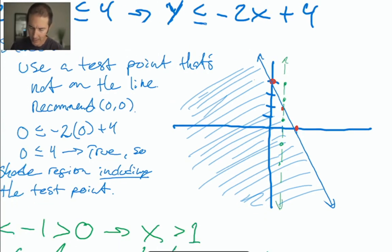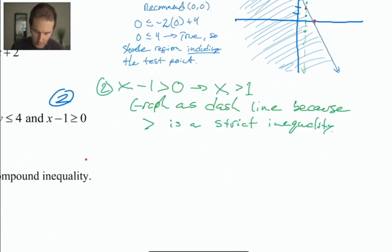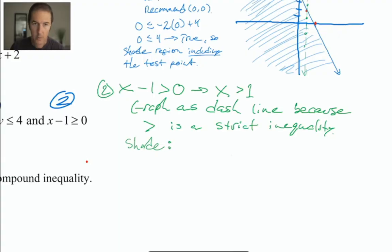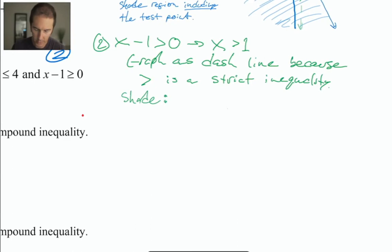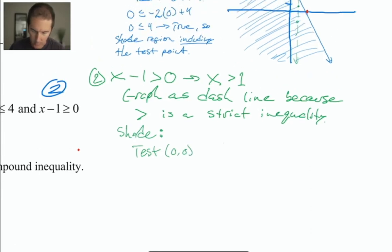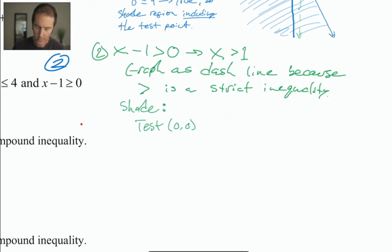And now we have to talk about shading. When it comes to shading, we're going to use a test point that's not on the line. I'm still going to recommend (0,0). And when we do that test, the only value that I need from that ordered pair is the x coordinate because my inequality only has an x in it. So let's do the test. Zero is greater than one.